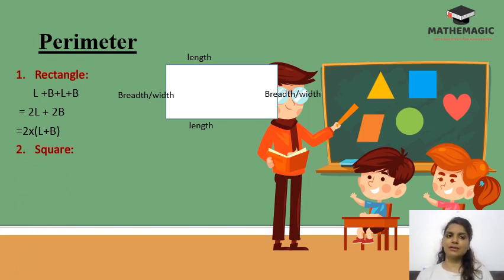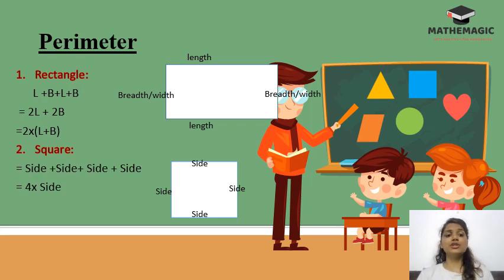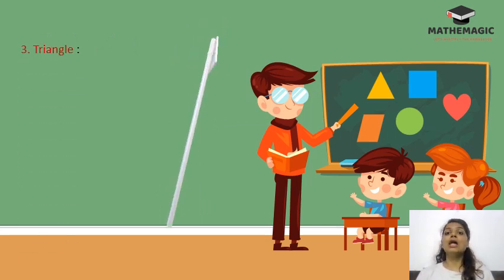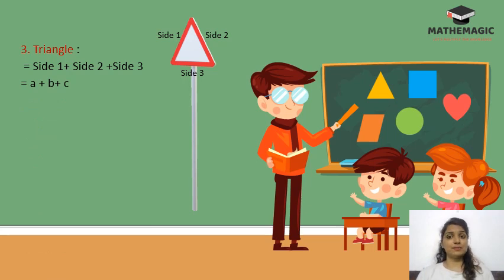The next shape is a square. The perimeter is simple: just add up all four sides, giving 4 × side. For a triangle, we have three sides, so the perimeter is side1 + side2 + side3, or a + b + c, where a, b, and c can be any values.